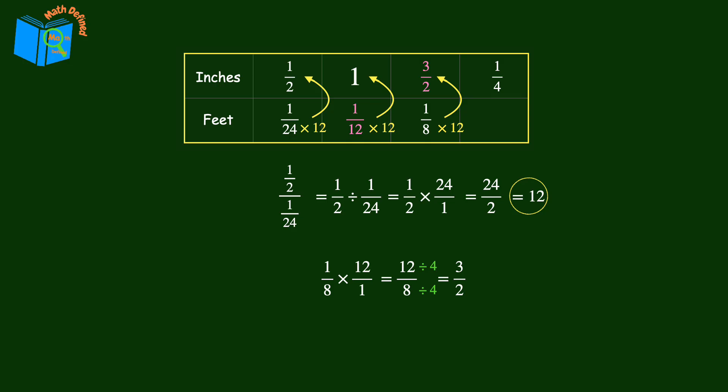To find the last missing value in the table, we will need to use division again to find out what times 12 equals 1 4th. So we'll divide 1 4th by 12. Multiplying by the reciprocal results in 1 48th. And now the table is complete.